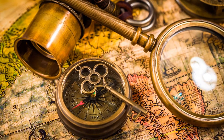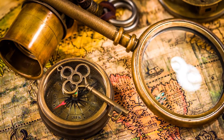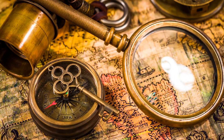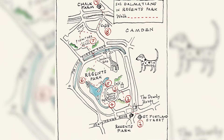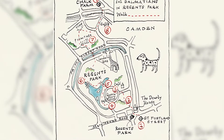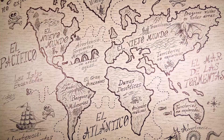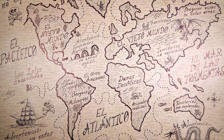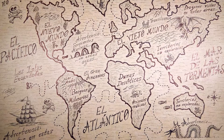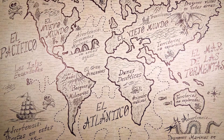With travelers' accounts, navigators' reports, literature, regional maps, and many other sources, many an ancient cartographer made these world maps by simply collecting and compiling all this data, often barely leaving their hometowns.